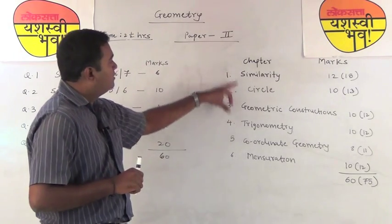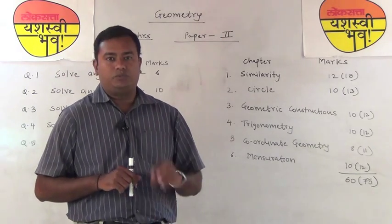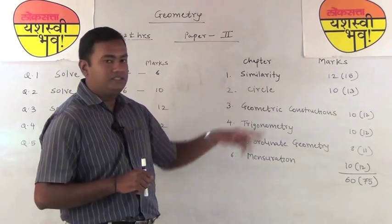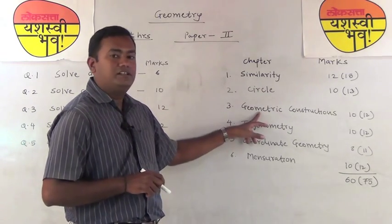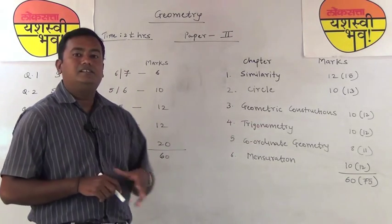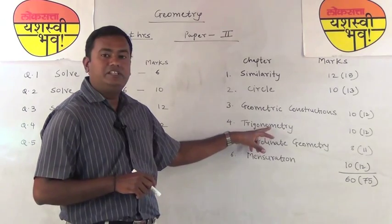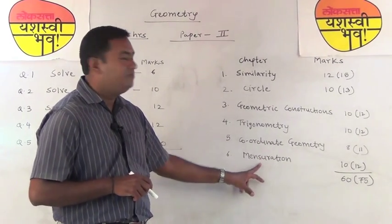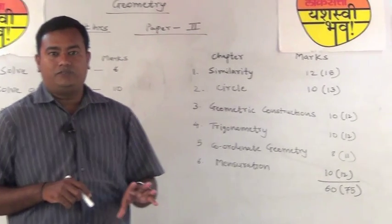The first 2 chapters include theorems, properties, and corollaries, and theorems will be asked from them. The geometry construction chapter is a relatively easy topic. The remaining 3 chapters are based on formulas — you have to learn the formulas given in trigonometry, coordinate geometry, and mensuration, which includes many formulas.